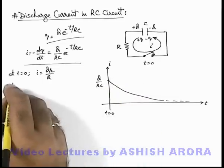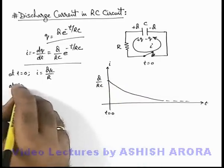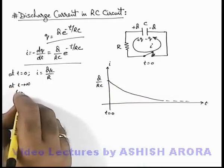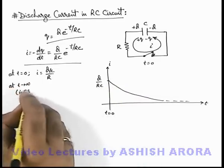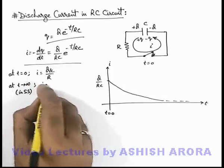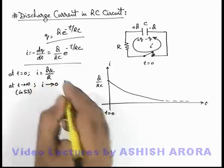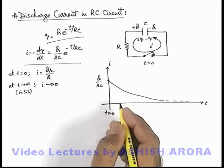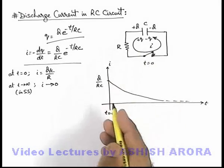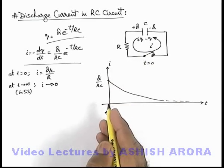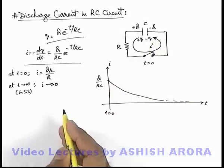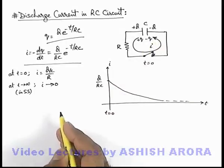Similarly, at t tending to infinity, that is in steady state, after a long time, the value of current will decrease down to zero, as in steady state, in a capacitive branch, the current must always be equal to zero.